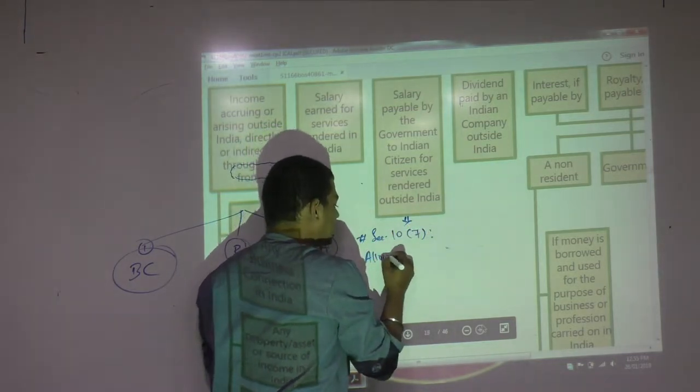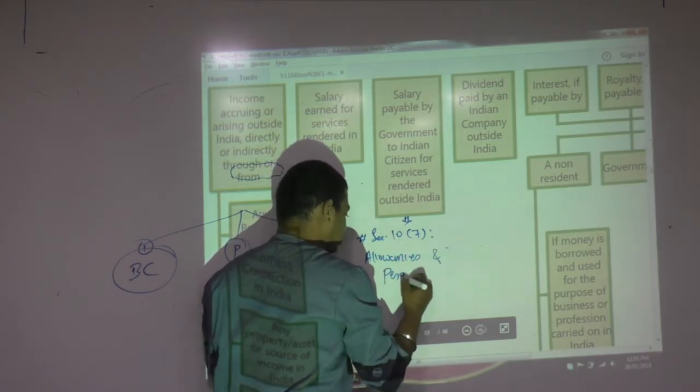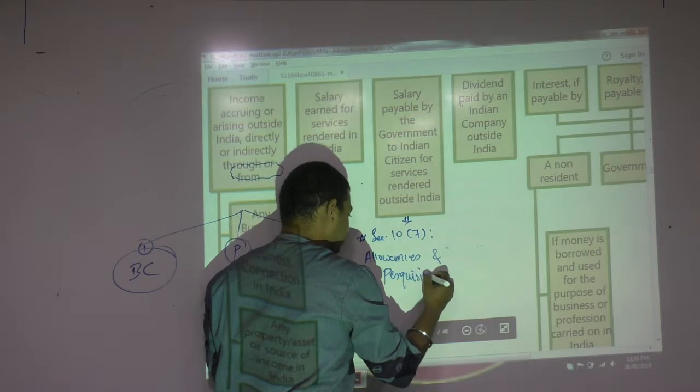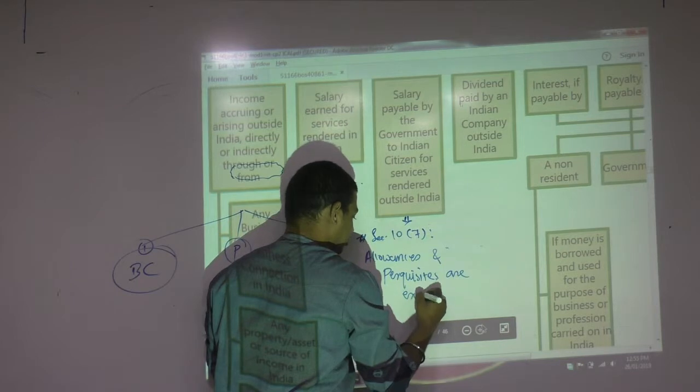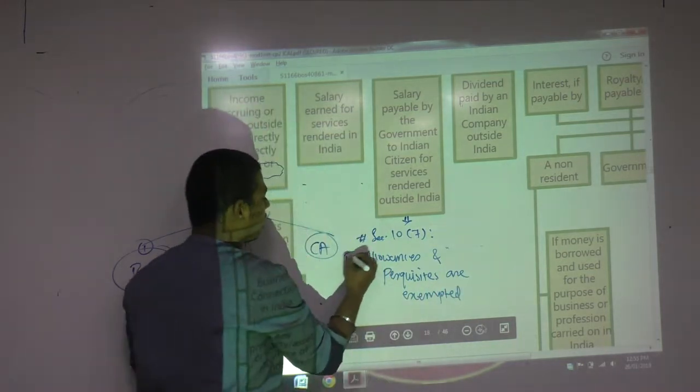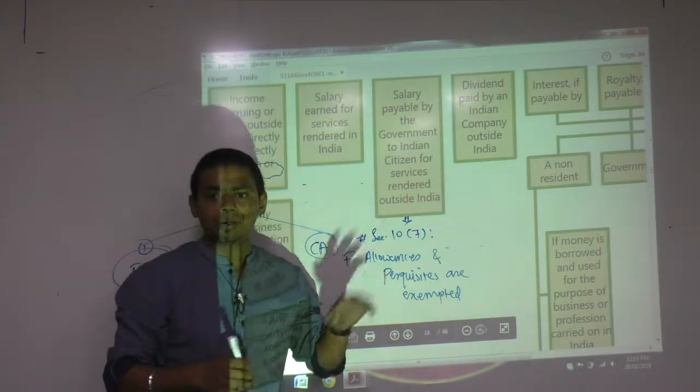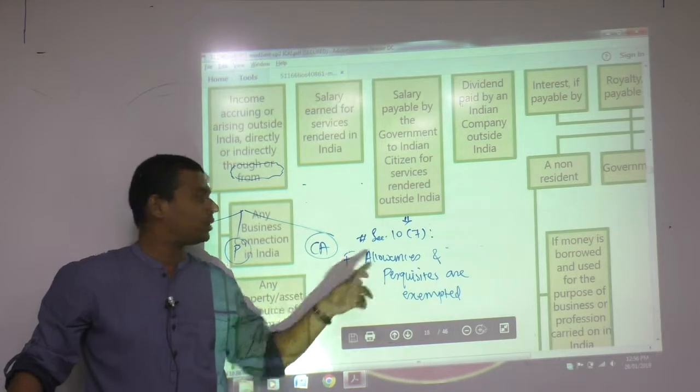Foreign allowances and perquisites are exempted. You can add one more word: foreign allowances and foreign perquisites are exempted under Section 10.7.